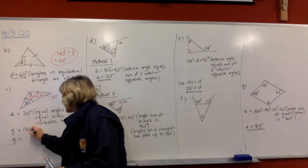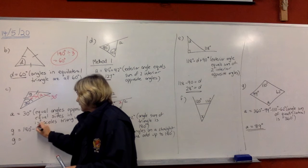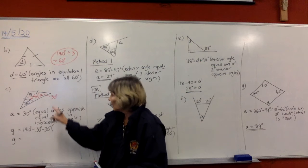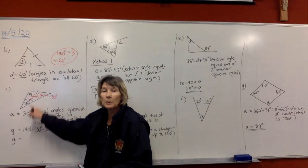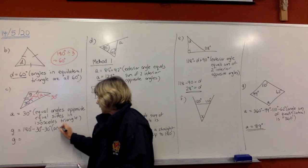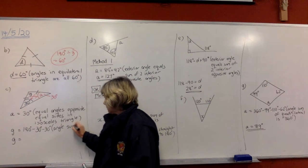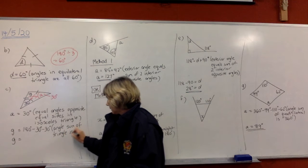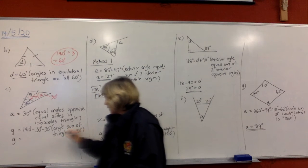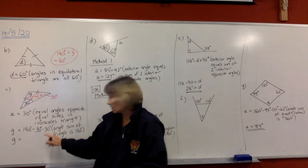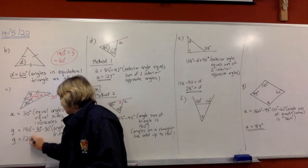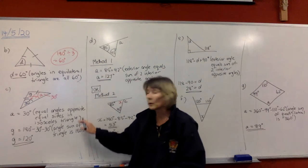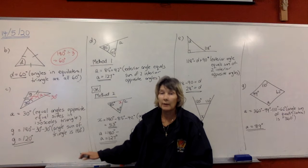We're going to take 180 degrees and take off the 30 here and the 30 here. The reason: the angle sum of a triangle is 180 degrees. If you use your calculator and do 180 minus 30 minus 30, you get 120 degrees. That's our final answer — we've used two reasons to get there.